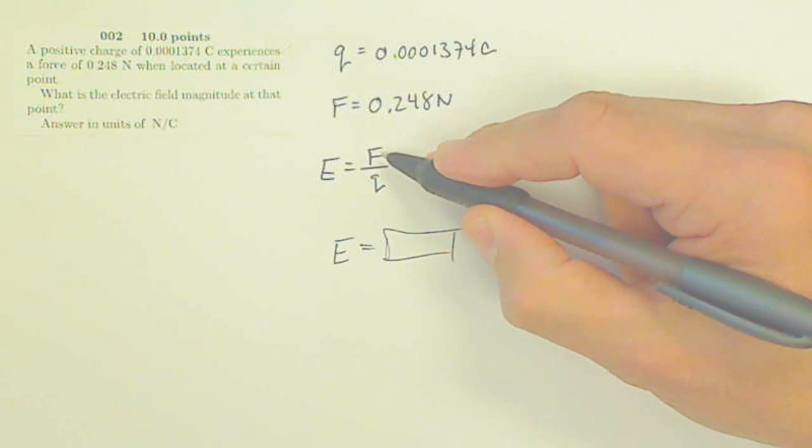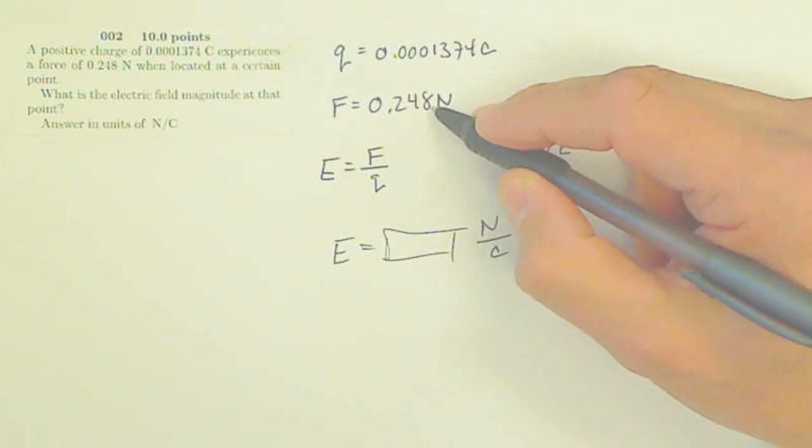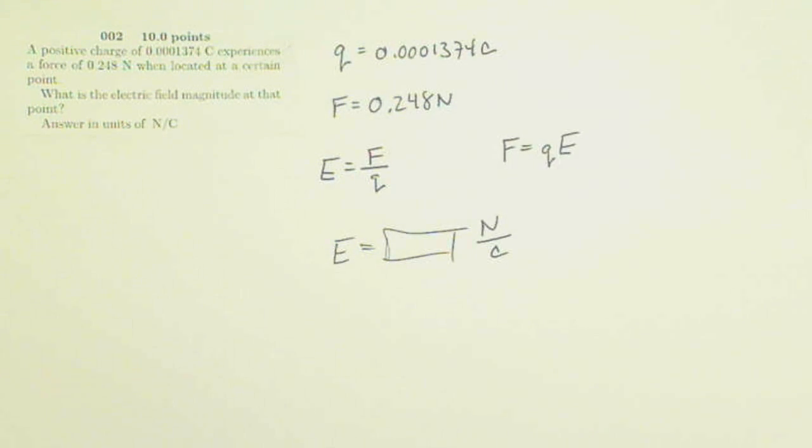So it's how many newtons a particular coulomb, how many newtons would be one coulomb if I know this force to that number of coulombs.